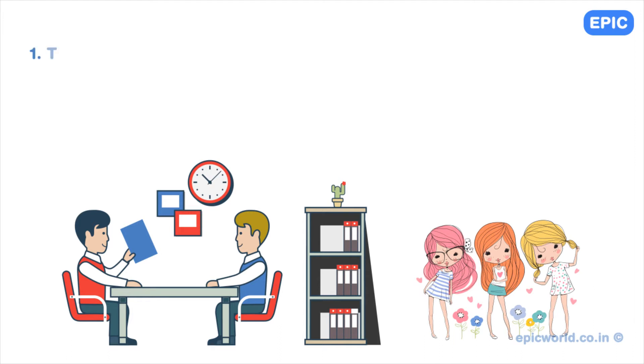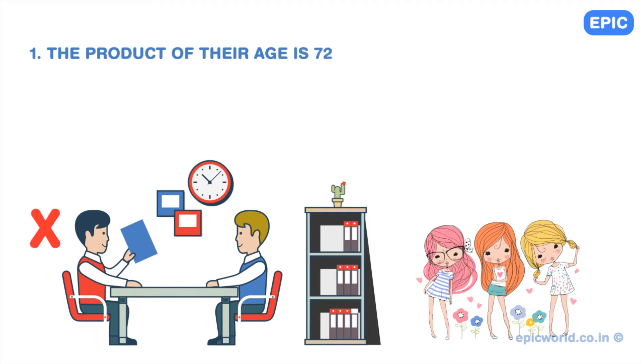Donald says the product of their ages is 72. Bill thinks hard and then concludes that this is not enough to find out the ages of Donald's three daughters.